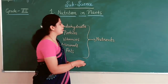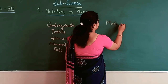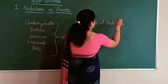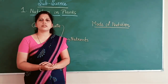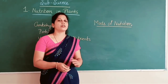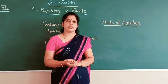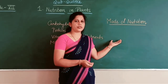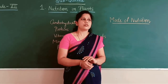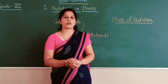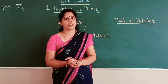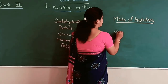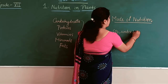Before that, let us study the mode of nutrition. Mode of nutrition means there are different modes of nutrition depending upon the type of plant or animal and how they are feeding. There are two modes of nutrition. But first, let us know what nutrition is. Plants are the only organisms that can prepare food, by making use of raw materials. The raw materials required for plants to grow are carbon dioxide, water, and minerals.